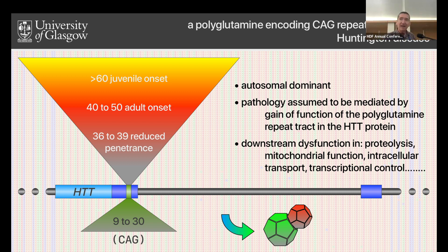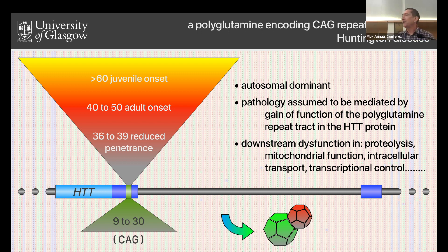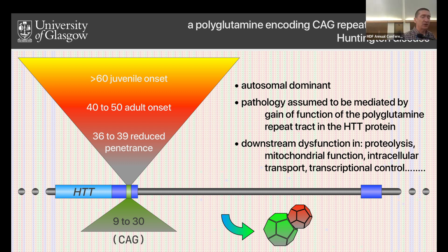When you have a large protein like that in the cell, it can form aggregates. If you have enough of that protein with a large enough repeat, then pretty much everything you look at in the cell goes wrong. There's mitochondrial dysfunction, intracellular transport goes wrong, proteolysis goes wrong, there's transcriptional dysregulation — all sorts of things go wrong in those cells.